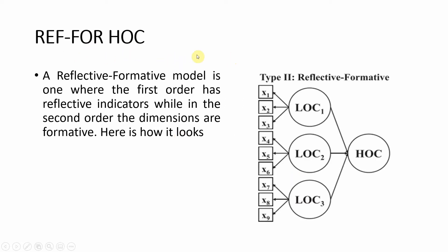A reflective-formative higher-order construct is one where the first order has reflective indicators — the arrows point towards the indicators. These are lower-order constructs 1, 2, and 3. In the second order, the dimensions are formative — that is, these dimensions are forming this particular construct. So the first order is reflective and the second order is formative.